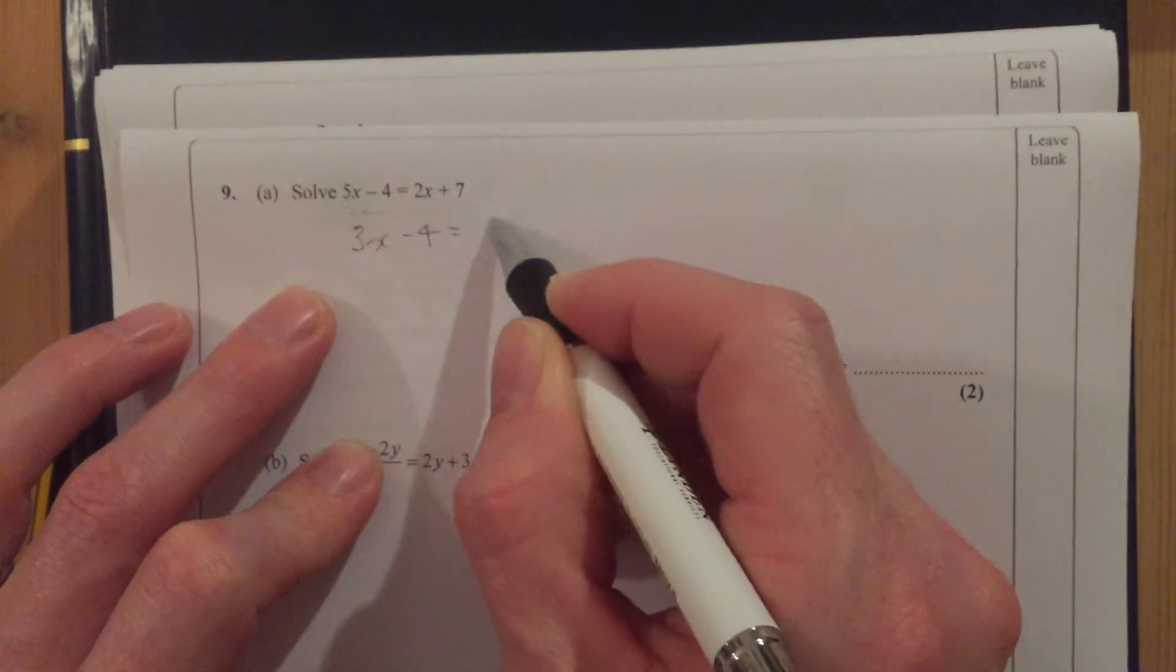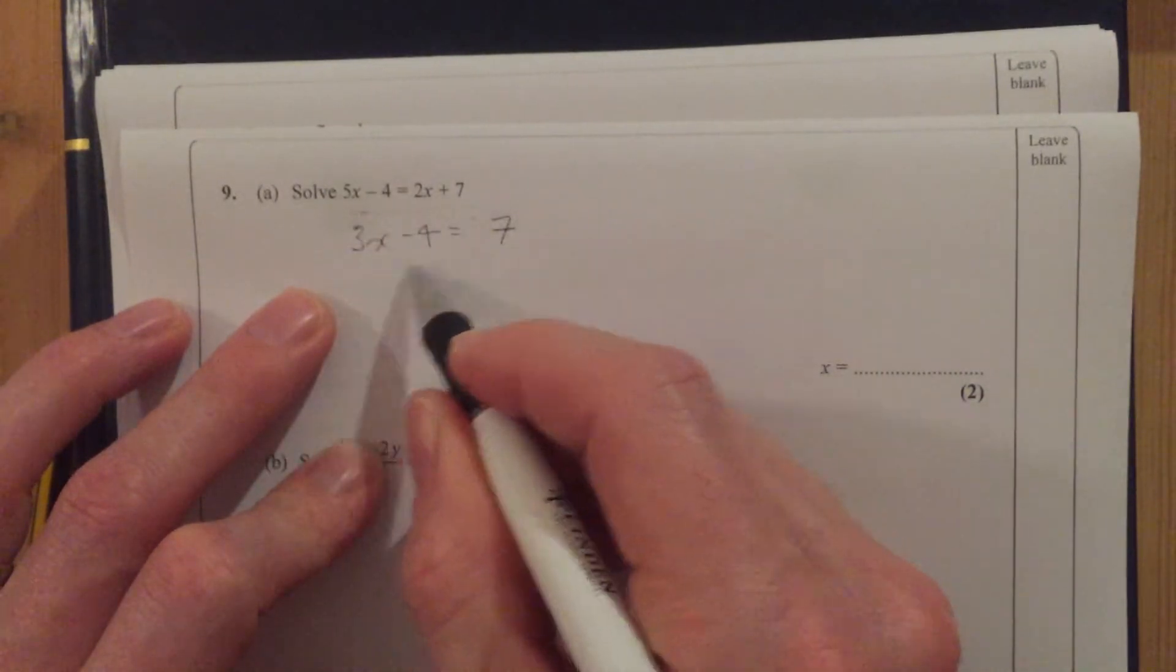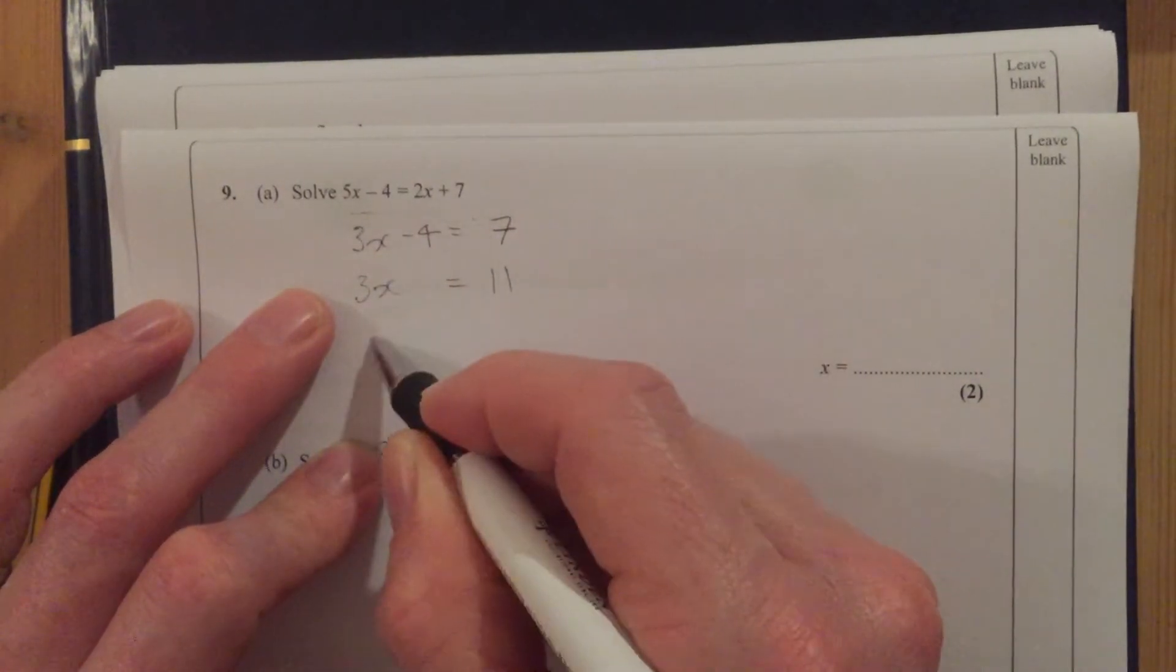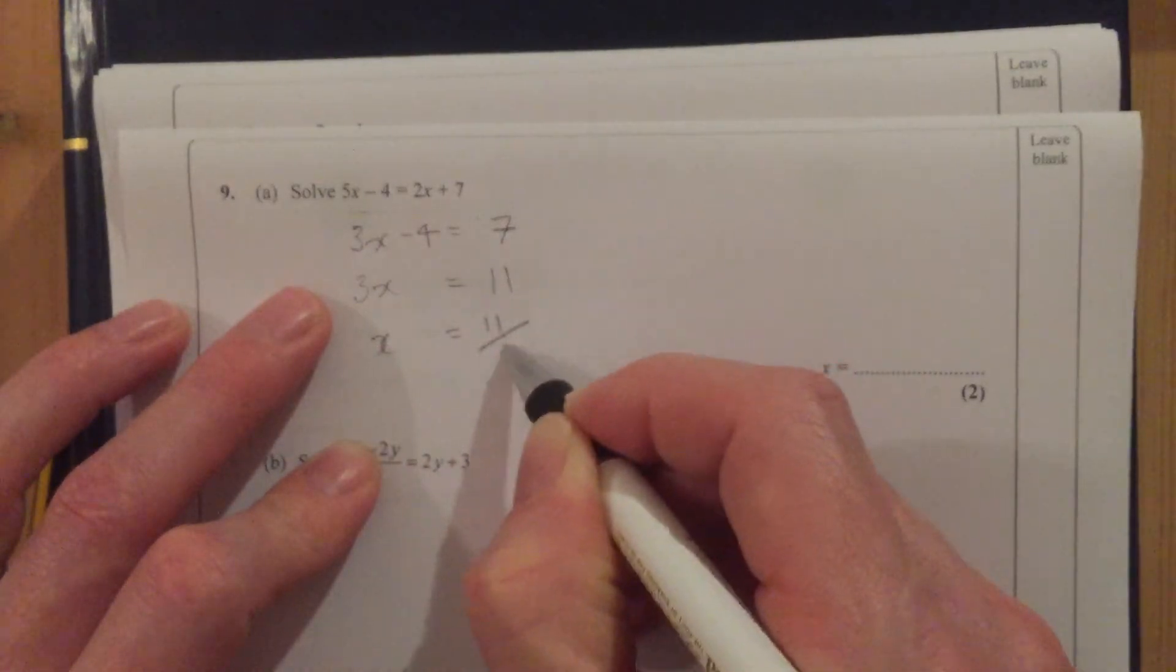2x is gone, equals 7. We're going to add 4 to both sides, so 3x equals 11. So x equals 11 over 3.